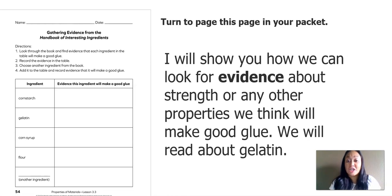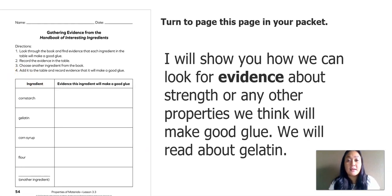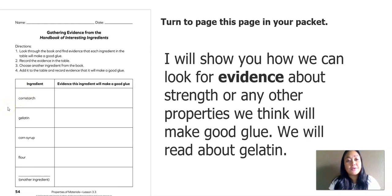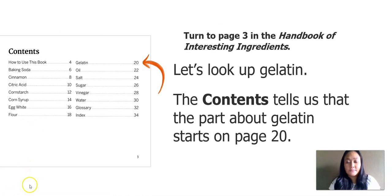I will show you how we can look for evidence about strength or any other properties we think will make good glue. First, we're going to read about gelatin. The title of this worksheet says Gathering Evidence from the Handbook of Interesting Ingredients. Here are the directions: First, look through the book and find evidence that each ingredient in the table will make a good glue. Second, record the evidence in the table. Third, choose another ingredient from the book. Lastly, add it to the table and record evidence that it will make a good glue.